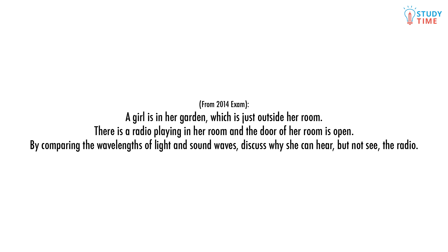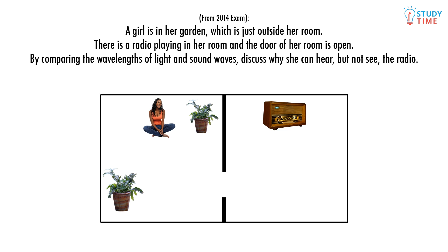A girl is in her garden, which is just outside her room. There is a radio playing in her room and the door of her room is open. By comparing the wavelengths of light and sound waves, discuss why she can hear but not see the radio. The most important thing to recognize here is...